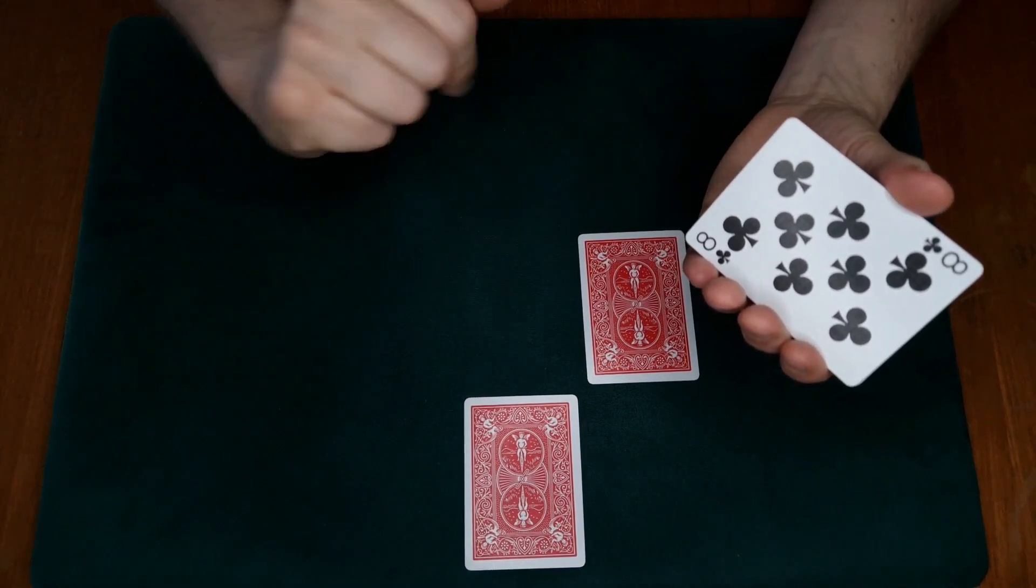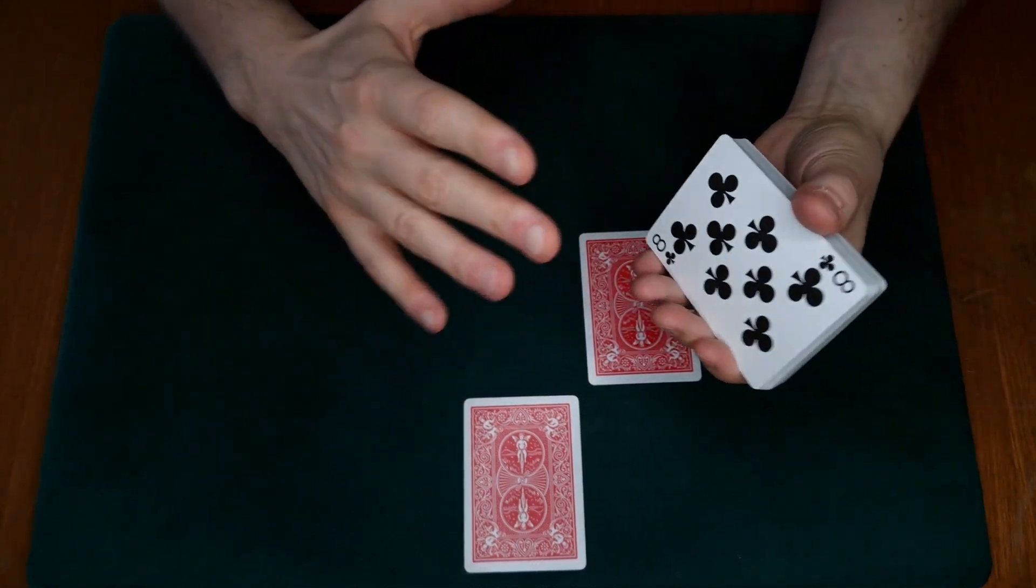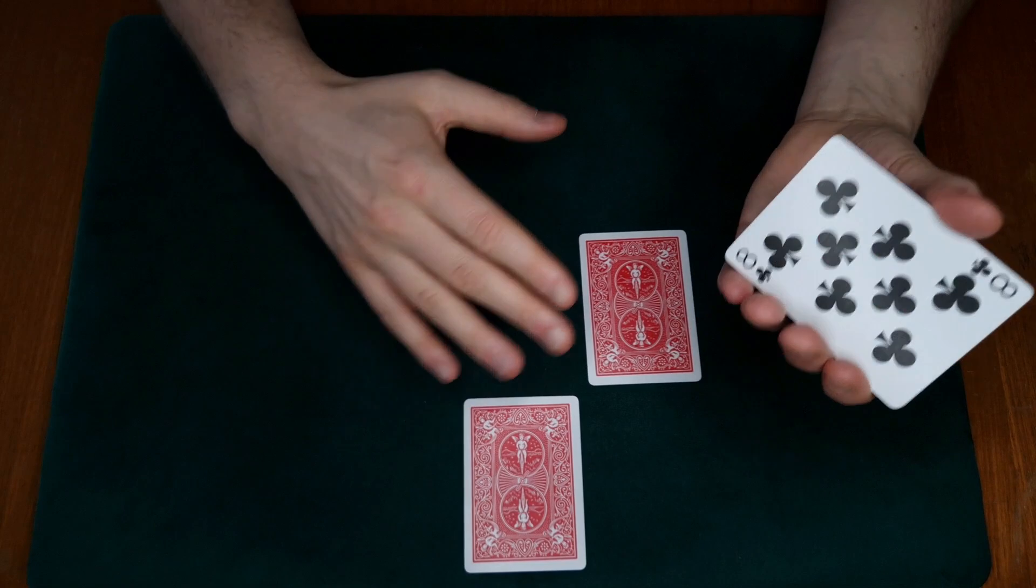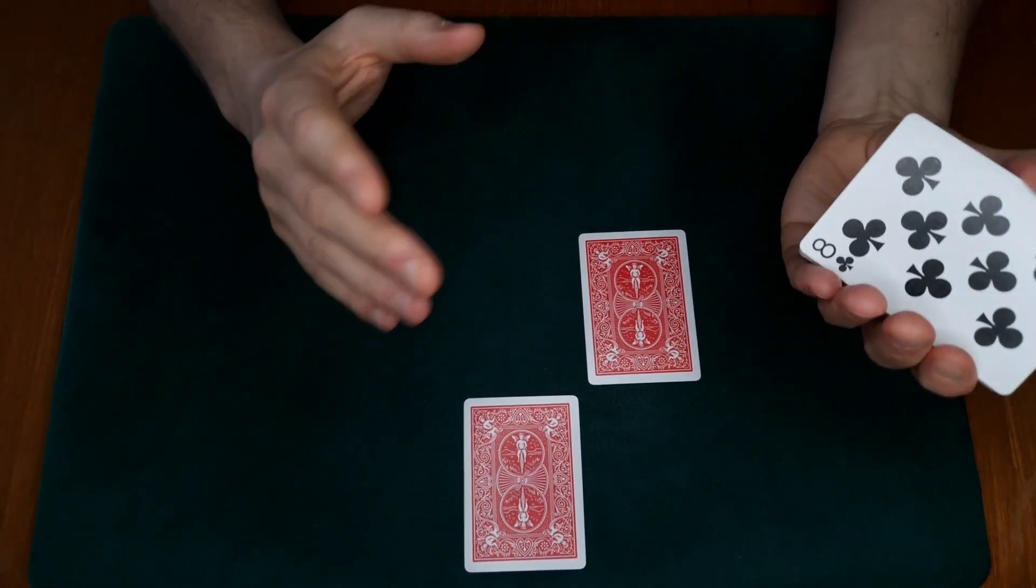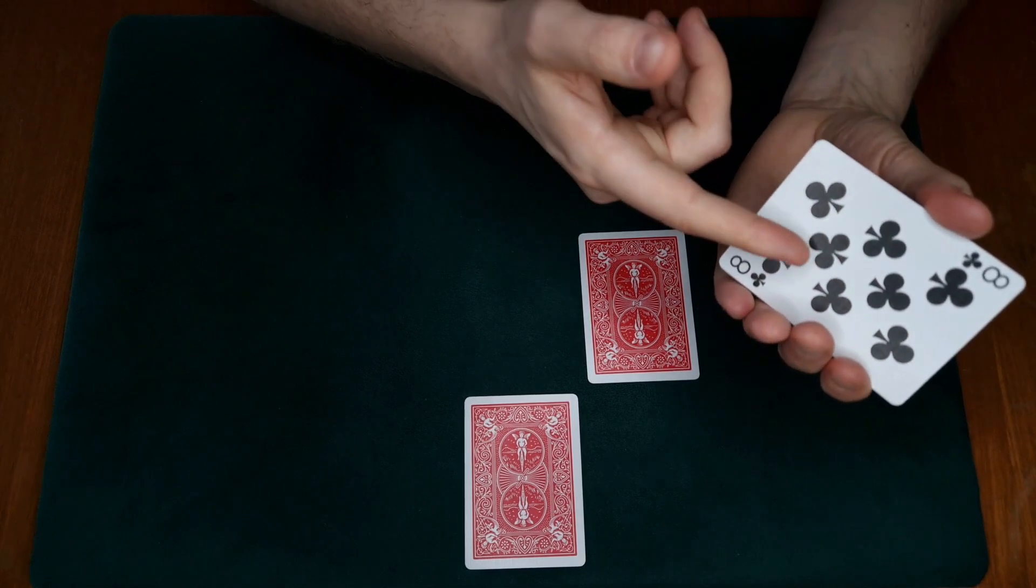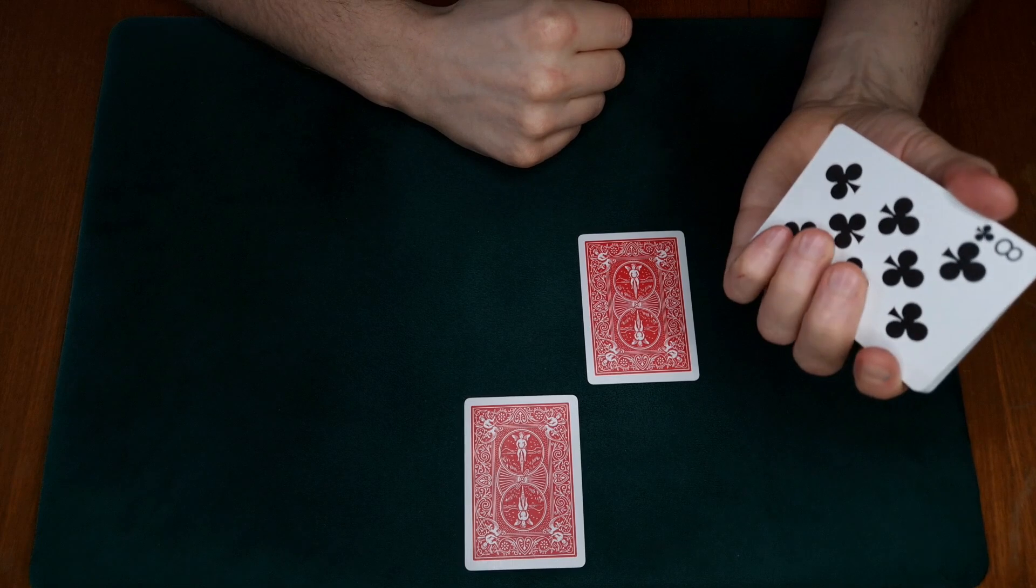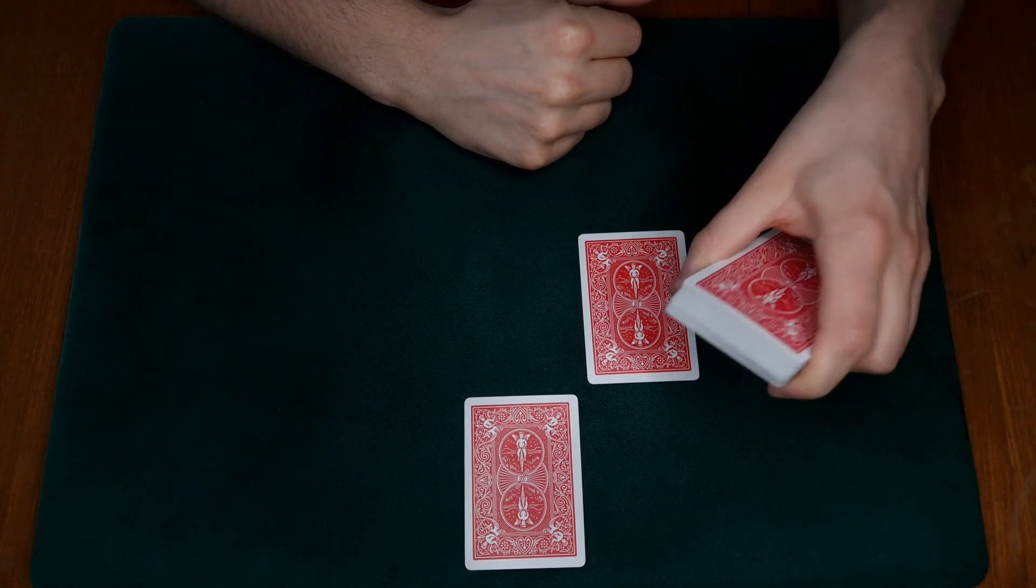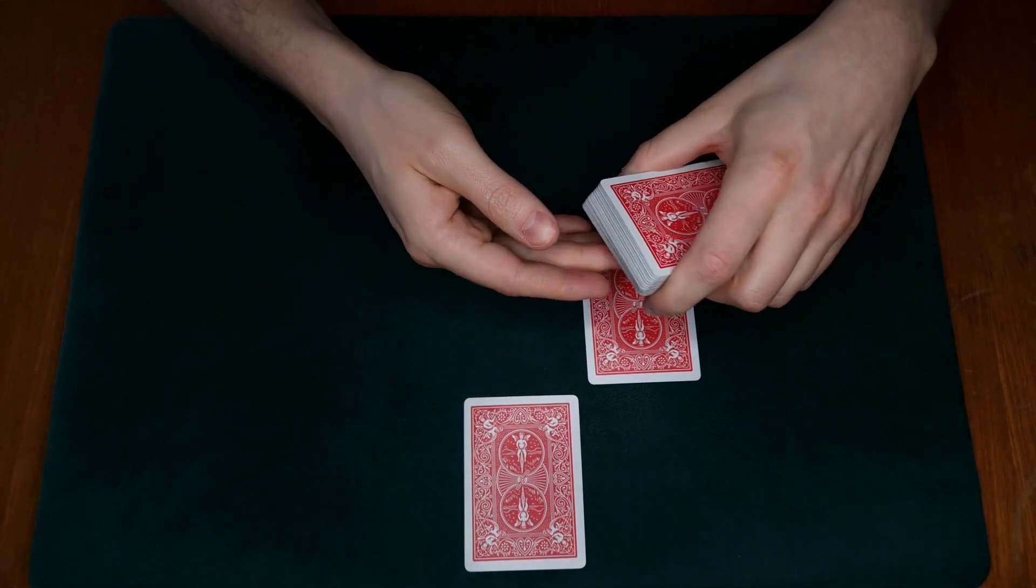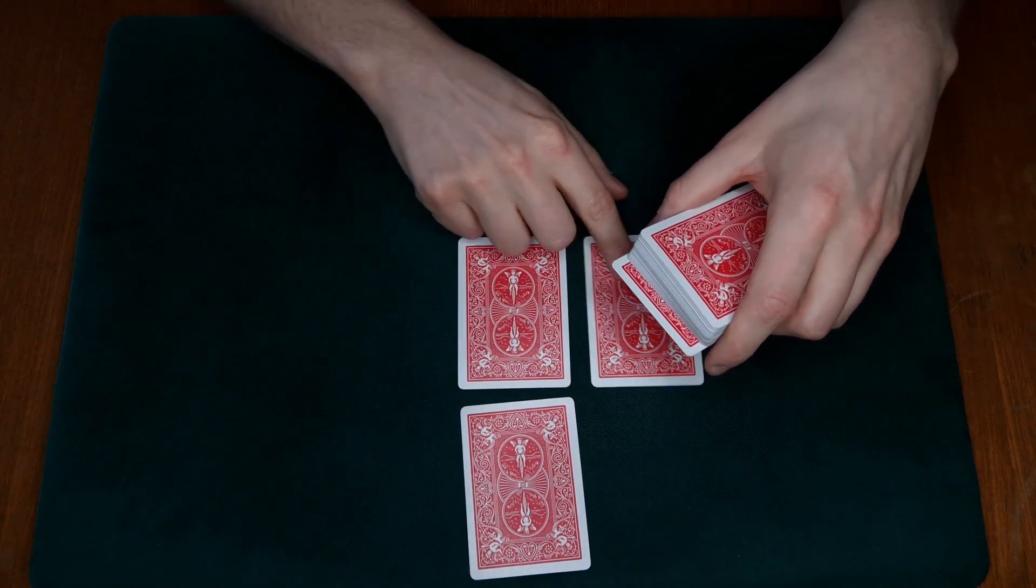And now we do another nice switch we've talked about before. We show the bottom card and we're going to do the glide. So go watch the glide video if you haven't seen that. That's the great thing about this trick - it's full of sleight of hand, but it's these fundamental sleights that we all should learn and know and master.